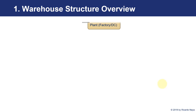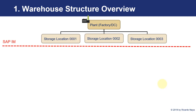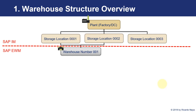First of all, we are going to see the whole structure. The same as with WM, it is going to be connected to the inventory management functionality. If we have a plant or a distribution center, this plant and distribution center can have different store locations. This is the Inventory Management functionality of SAP. And in the part of SAP EWM, we can connect some of these store locations to what are called warehouse numbers. This is the same meaning and the same structure as in SAP WM.